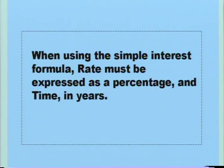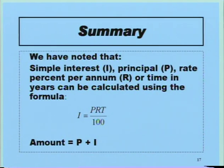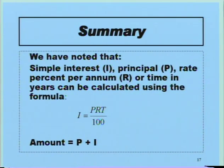When using the simple interest formula, rate must be expressed as a percentage and time in years. In summary, simple interest I, principal P, rate percent per annum R, and time in years T can be calculated using the formula I = PRT divided by 100, and the amount equals principal plus interest.